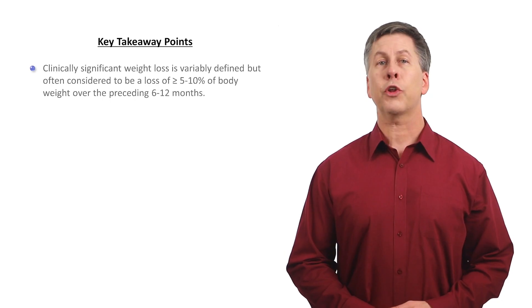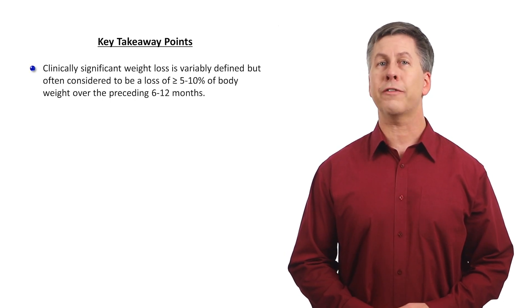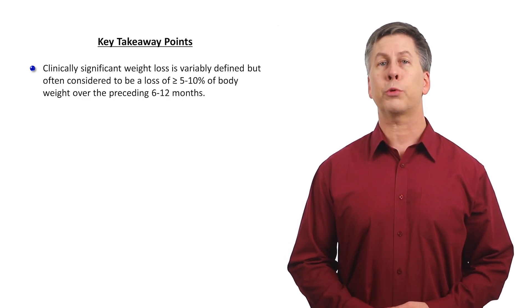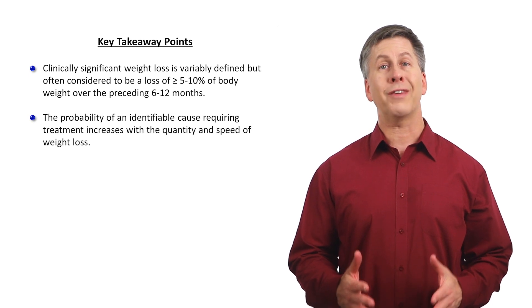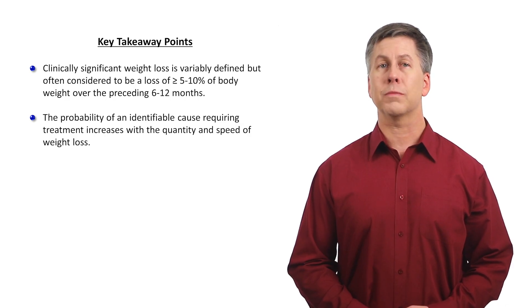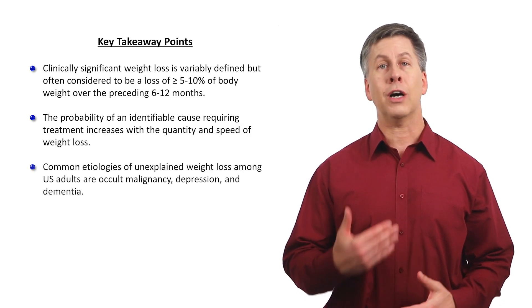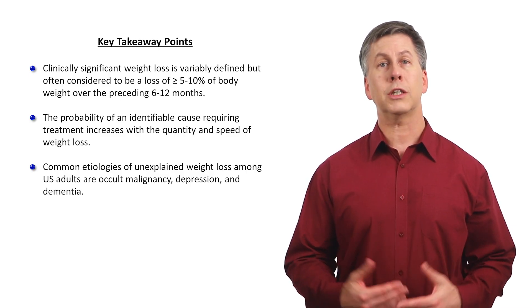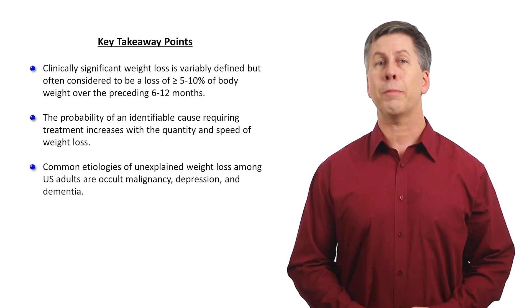The key takeaway points of this video. Clinically significant weight loss is variably defined, but often considered to be a loss of 5-10% of body weight over the preceding 6-12 months. The probability of an identifiable cause requiring treatment increases with the quantity and with the speed of weight loss. Common etiologies of unexplained weight loss among U.S. adults are occult malignancy, depression, and dementia.